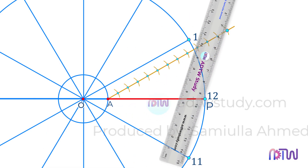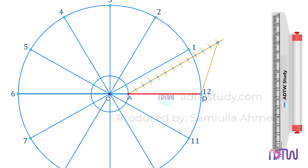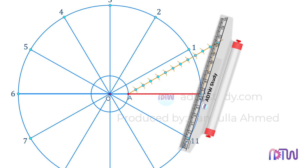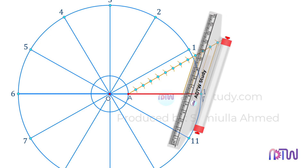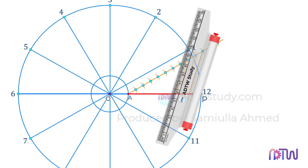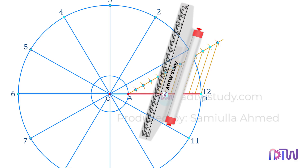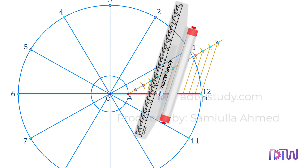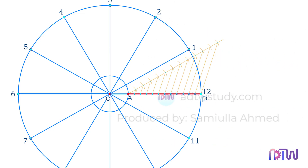Join these two points, and using a drafter or roller scale, draw parallel lines from these points up to line AP as shown. Now label these points from the outer side as 1, 2, 3, and so on up to 11, as shown.